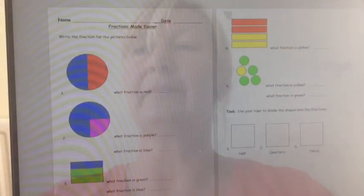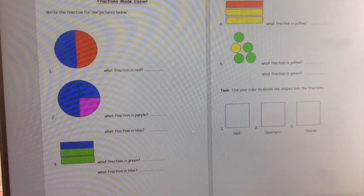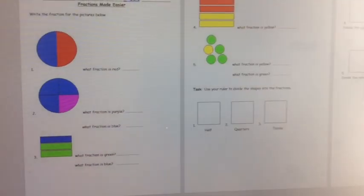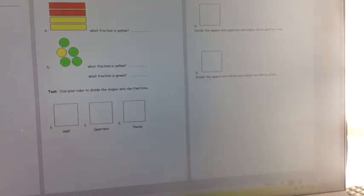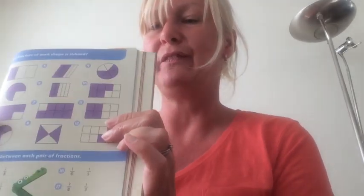OK, time for you to have a go. It's up to you which level of work you want to choose. This is a slightly easier one and it's in your pack. It's called Fractions Made Easier. And there should be one, two, three parts. You can also have a go at this page, which is in your pack. Page 54 and page 55.